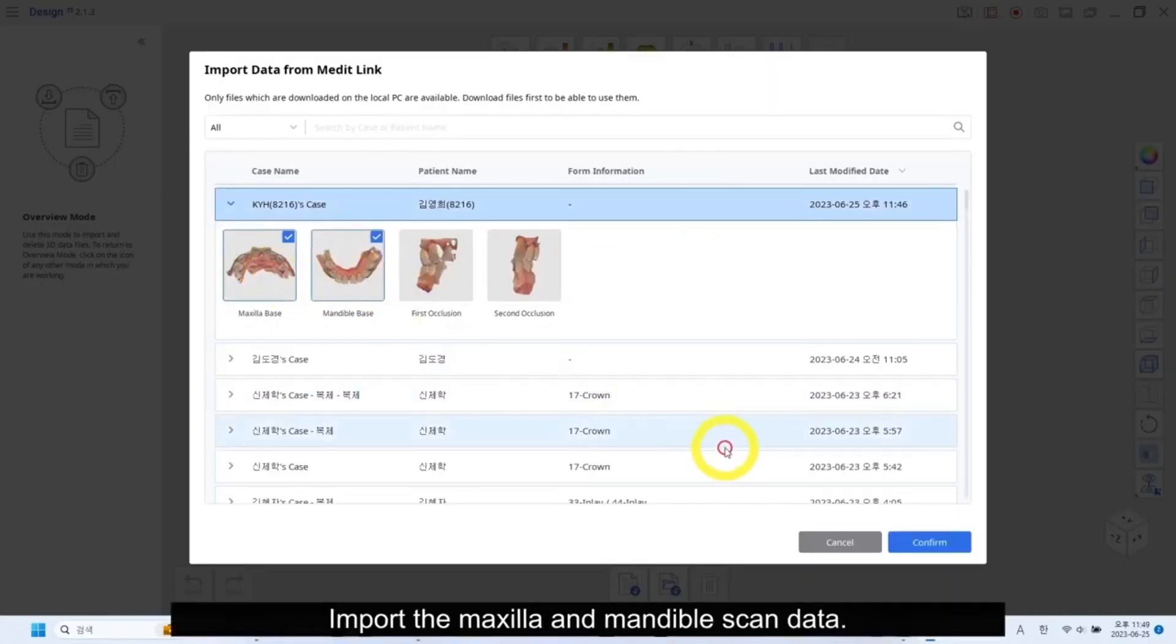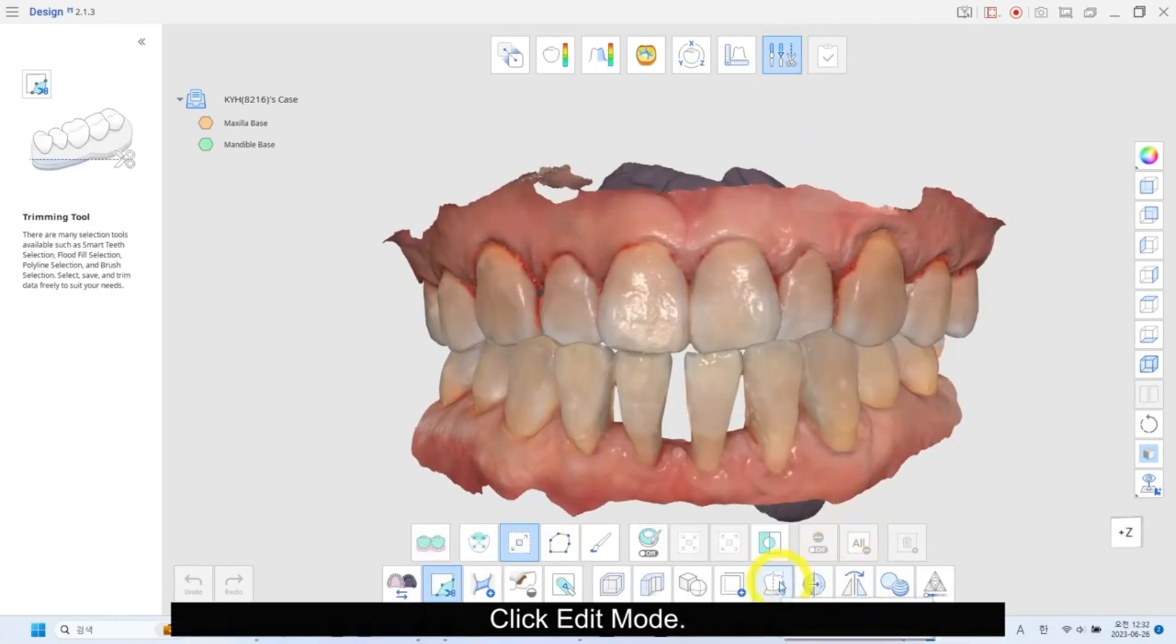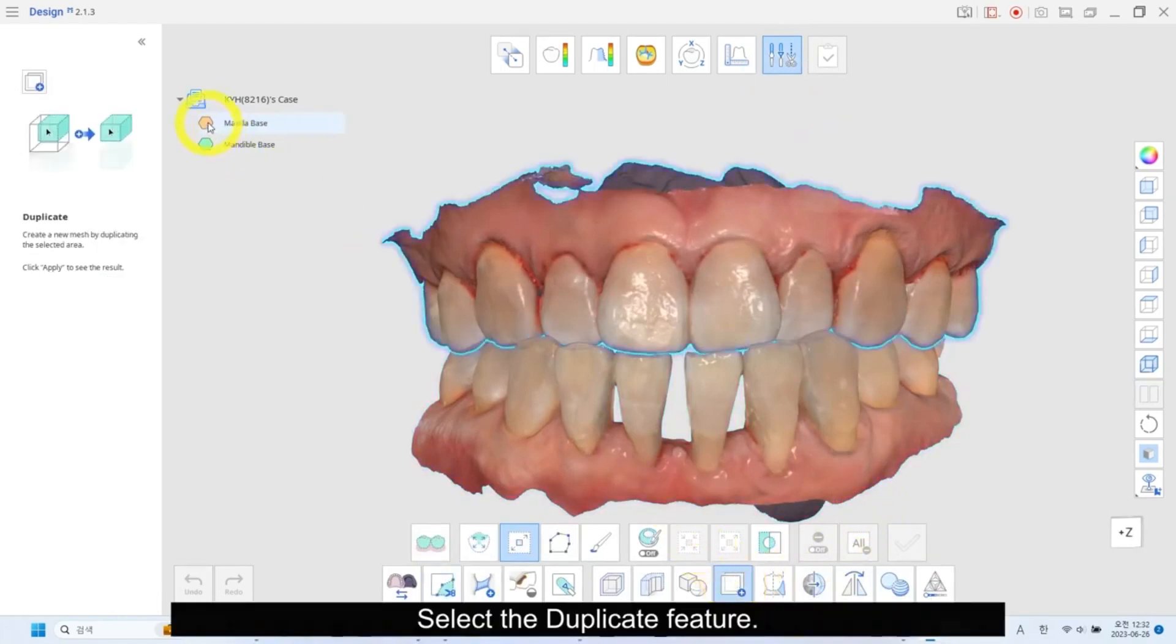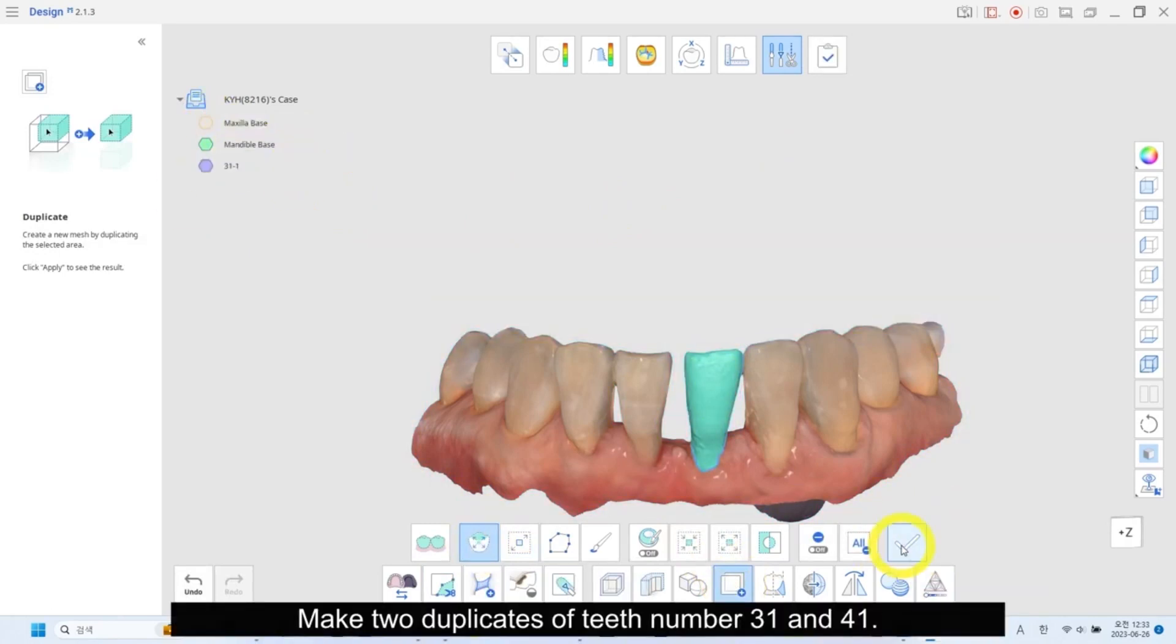Import the maxilla and mandible scan data. Click edit mode. Select the duplicate feature. Make two duplicates of tooth number 31 and 41.